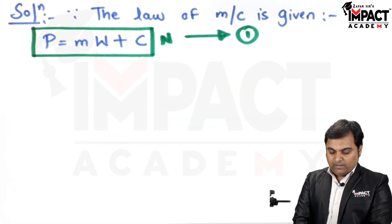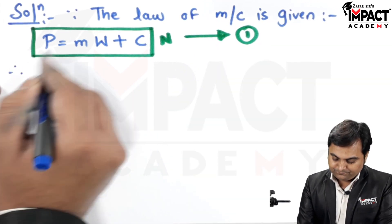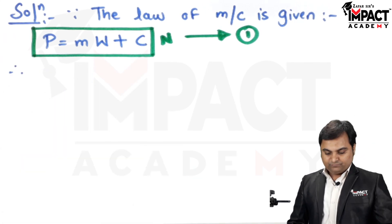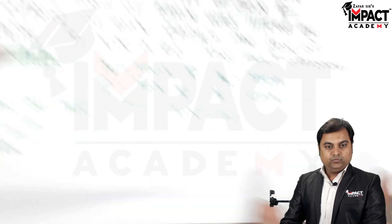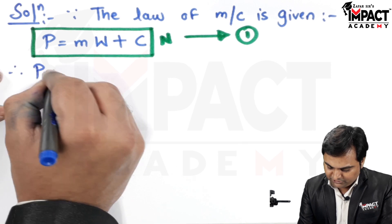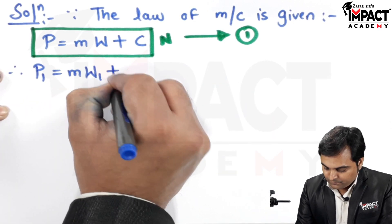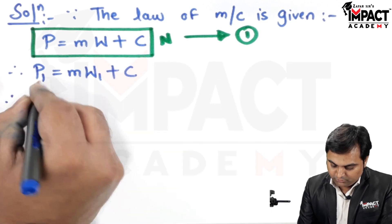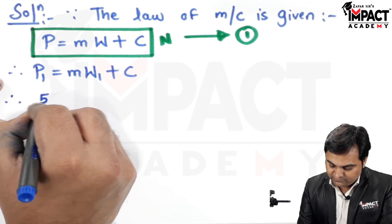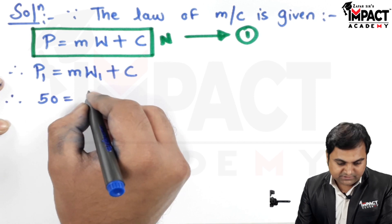Now applying this law of machine for both conditions, for condition 1 it would be P1 equals M times W1 plus C. Putting the values, P1 is 50 and W1 is 500, that is the second equation.